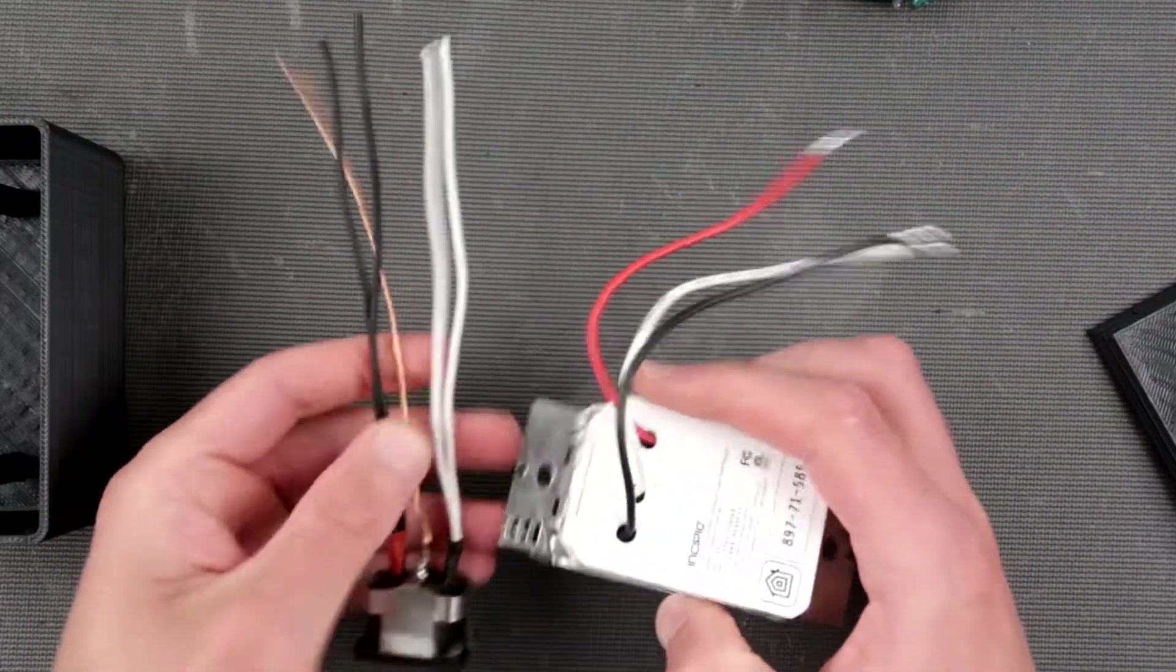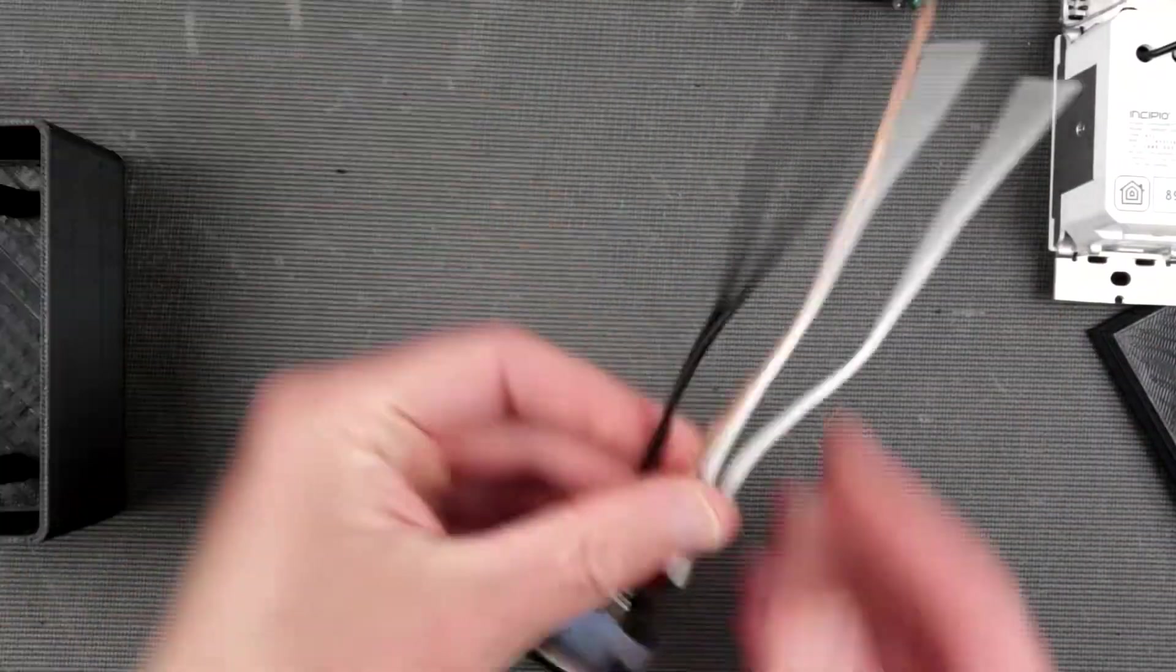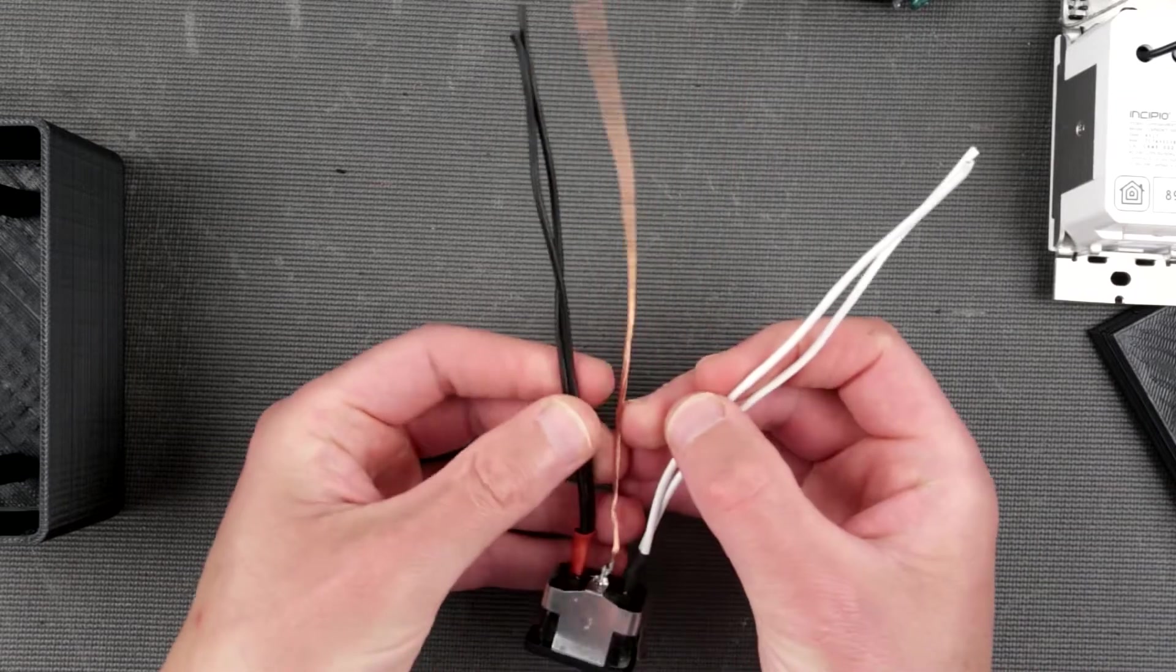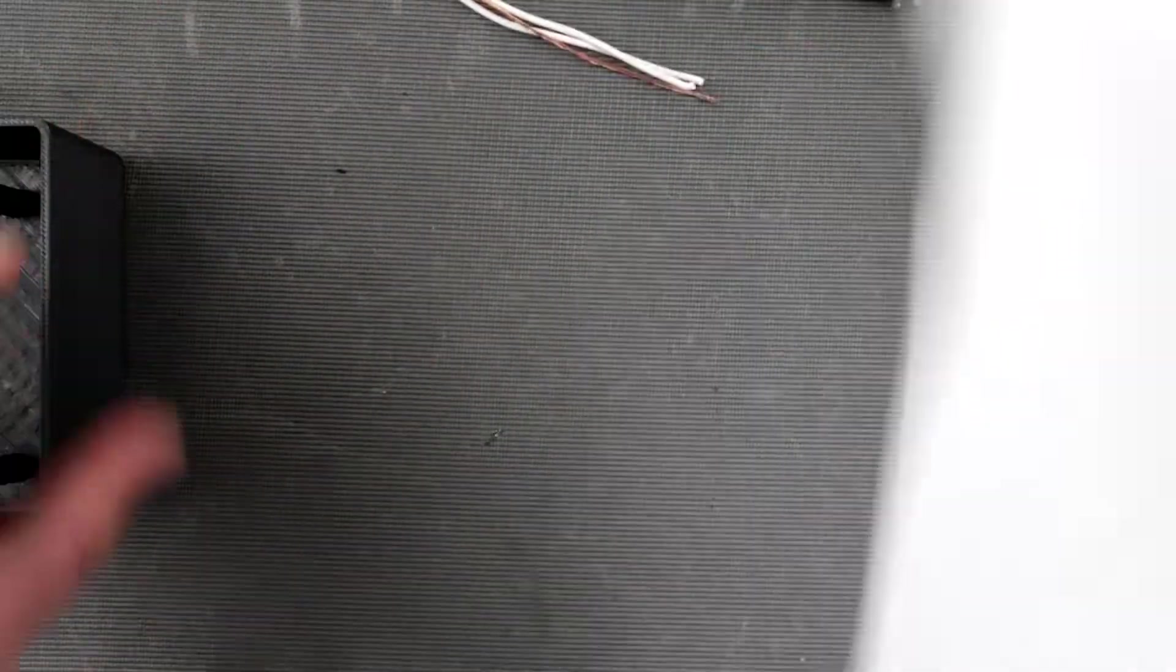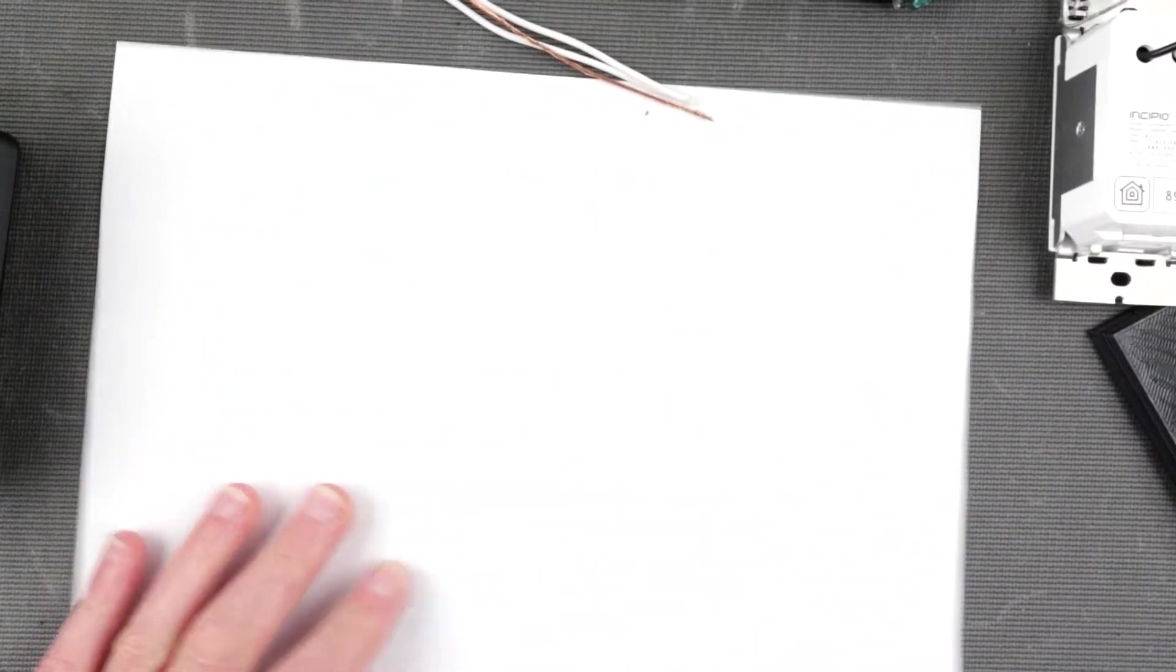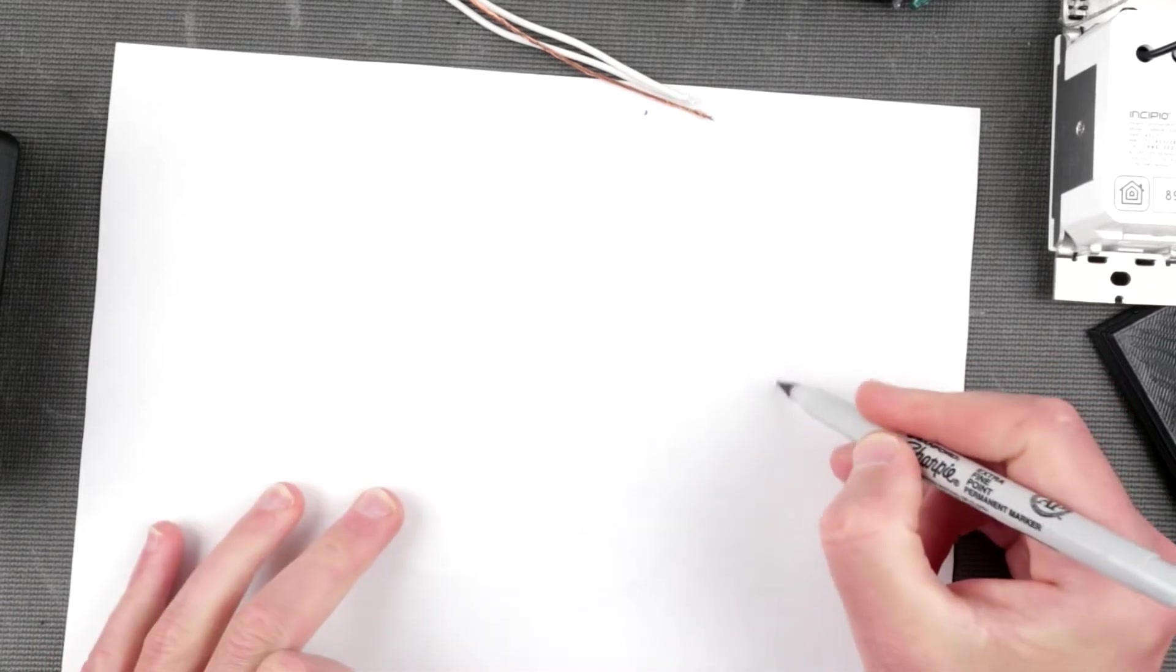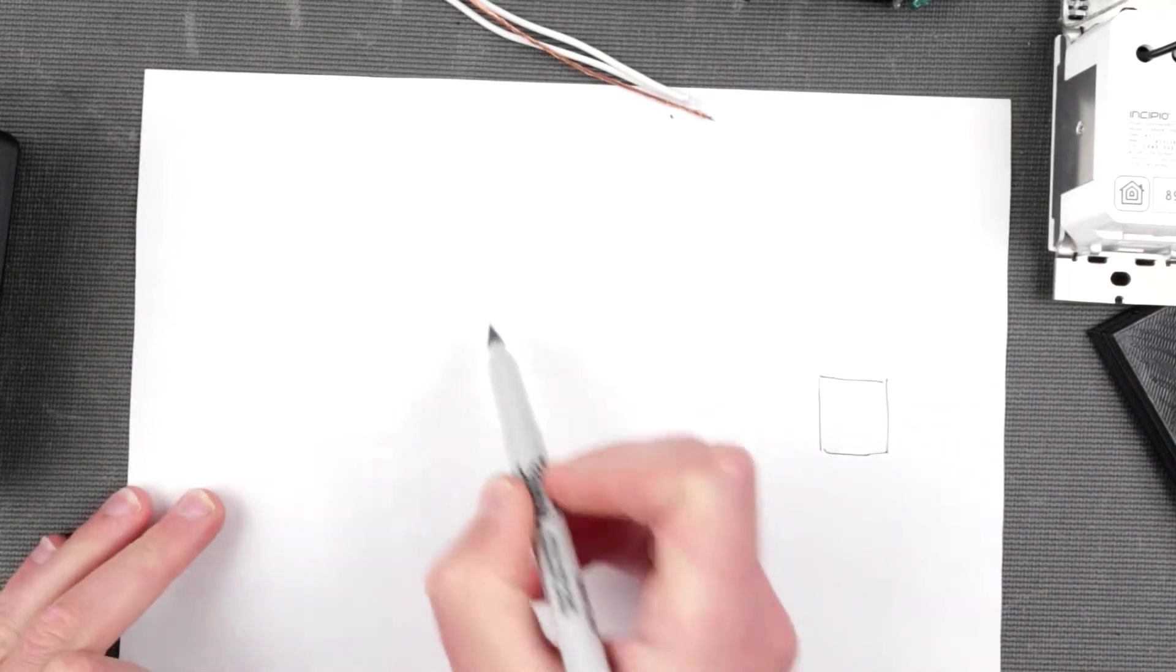But before we assemble, I want to explain my wiring, specifically why do I need two of each wires here. So we have a piece of wire paper here and let's just draw something.